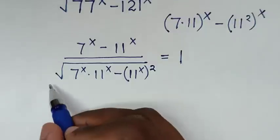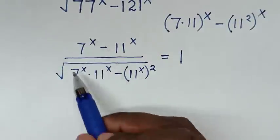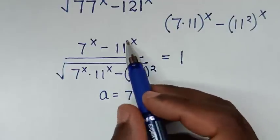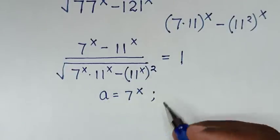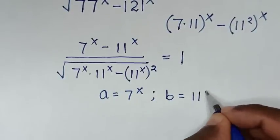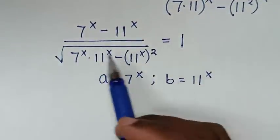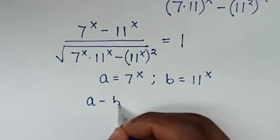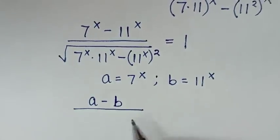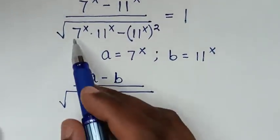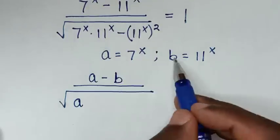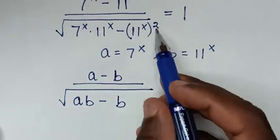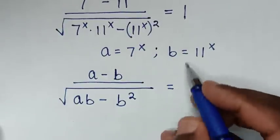In the next step, we notice 7^x and 11^x are common throughout. So let a = 7^x and b = 11^x. Substituting, our problem becomes (a - b) over the square root of (ab - b²), equal to 1.